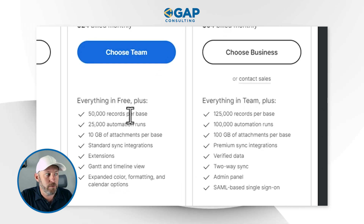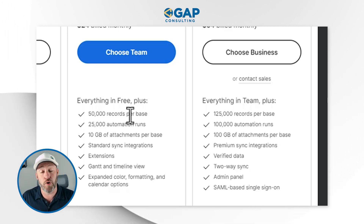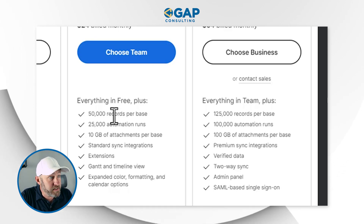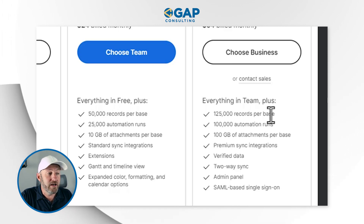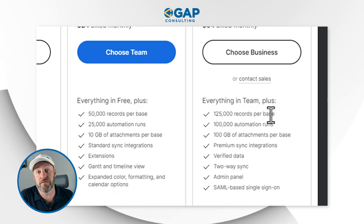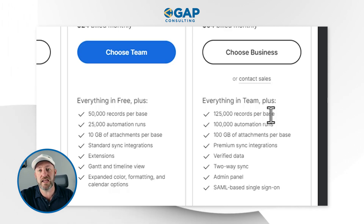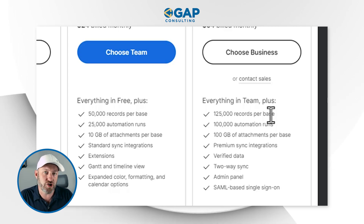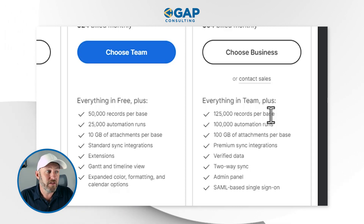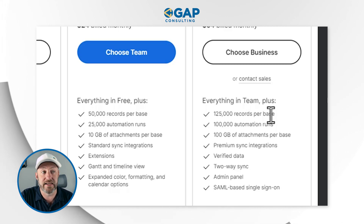In the team plan, we're getting 50,000 records per base — exactly the same amount we used to get on the pro plan. The business plan offers an optional upgrade to 125,000 records per base, which is a lot more records. This is something we've been asking Airtable for for a long time. They're saying yes, but we're running a business and will charge a little more for it. Personally, I'm excited about this — finally an option to pay a bit more and get more capacity from our databases.